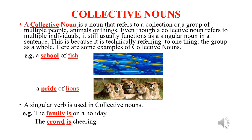We have reached the fifth kind of noun — collective nouns. A collective noun is a noun that refers to a collection or a group of multiple people, animals or things. Even though a collective noun refers to multiple individuals, it still usually functions as a singular noun in a sentence, because it is technically referring to one thing — the group as a whole. Here are some examples: a school of fish — you can see many fish together in a group, so we call it a school of fish. A pride of lions — lions sitting together in a group. A singular verb is used with collective nouns.